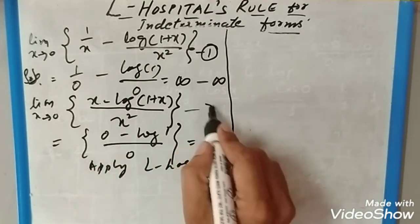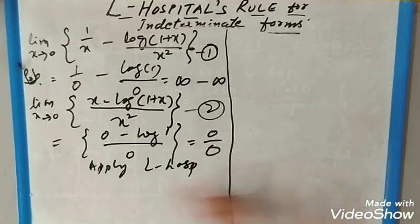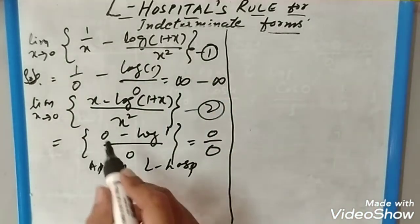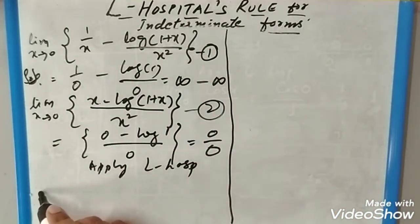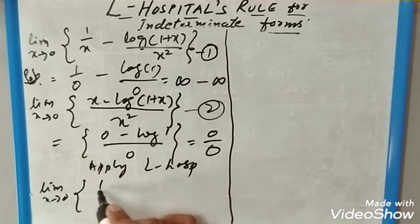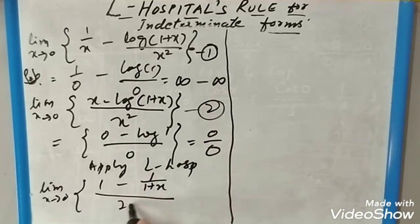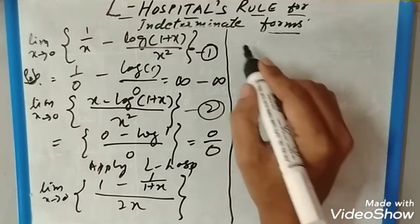When you apply L'Hospital's rule, it will become limit x tends to 0: differentiation of x is 1 minus the derivative of log(1+x) is 1/(1+x), and x² becomes 2x. Now solve this equation.